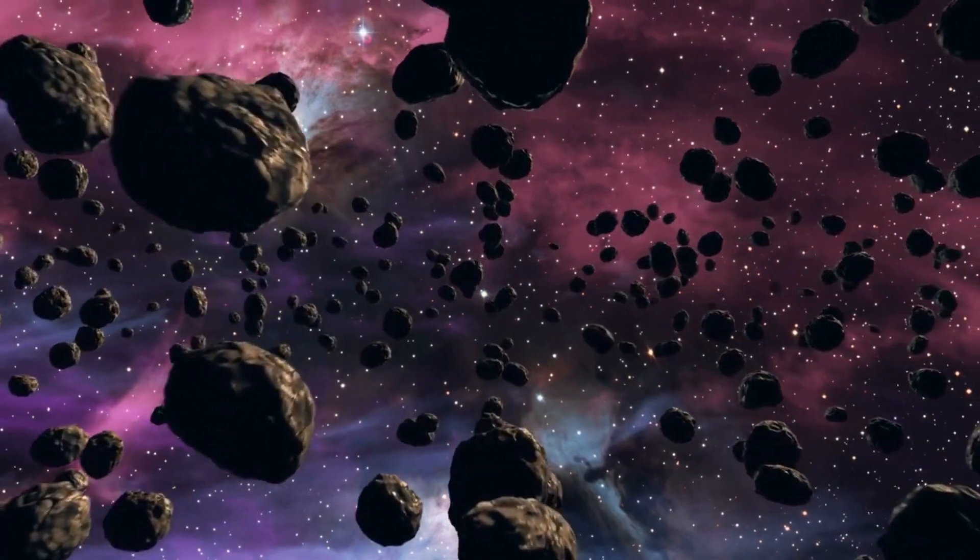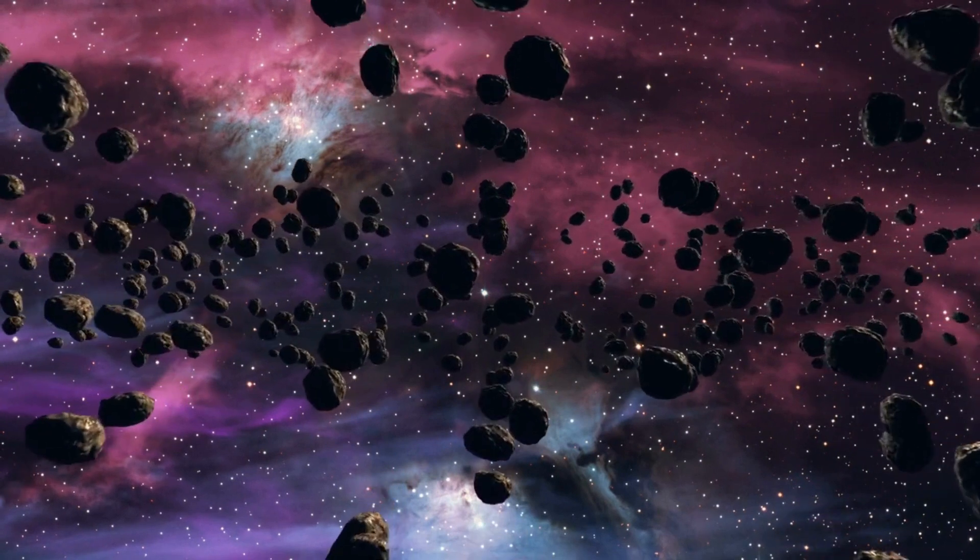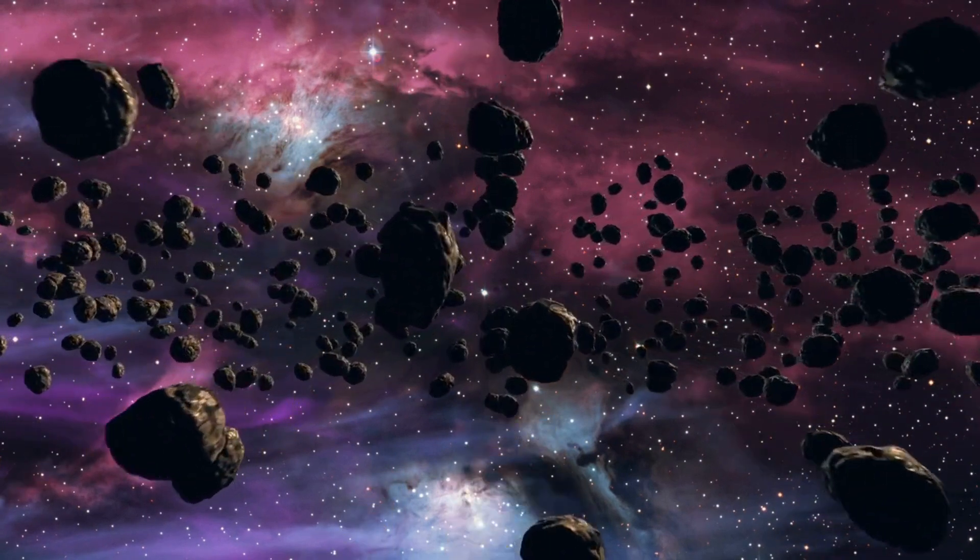The composition and structure of the Kuiper Belt are believed to hold important clues to the early history of the solar system and the processes that shaped the formation of the planets.